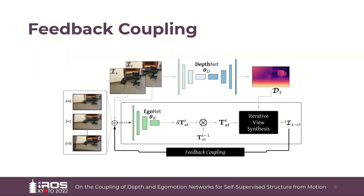The first form of coupling that we employ is called feedback coupling. This is applied to our ego-motion network. Rather than producing the ego-motion prediction via a single forward pass, our network iteratively updates the initial prediction through additional forward passes. In these subsequent forward passes, the source image within the network input is replaced by the current reconstructed image. In doing so, the network is able to produce a pose correction, seen as delta t, that further aligns this reconstructed image with the target image. This process is repeated for a number of iterations until the reconstructed image is optimally aligned with the target image.